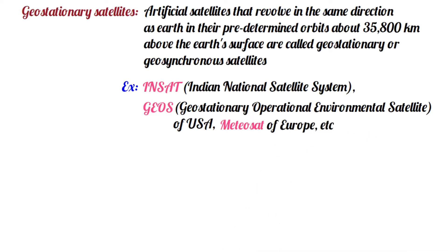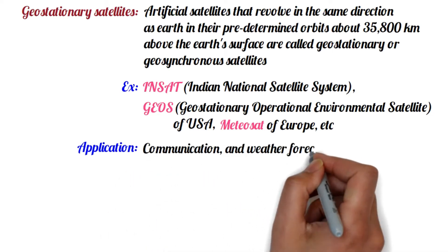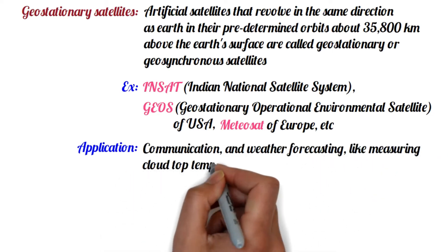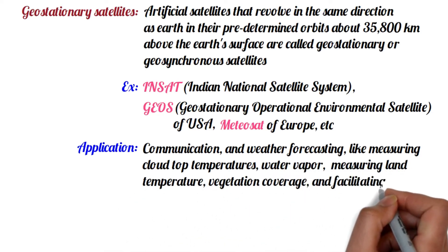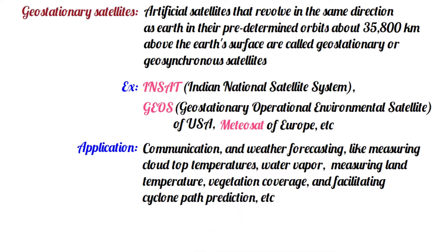These are high-orbit satellites. Basically, they are used for communication and weather forecasting, like measuring cloud top temperatures, water vapor, measuring land temperature, vegetation coverage, and facilitating cyclone path prediction.